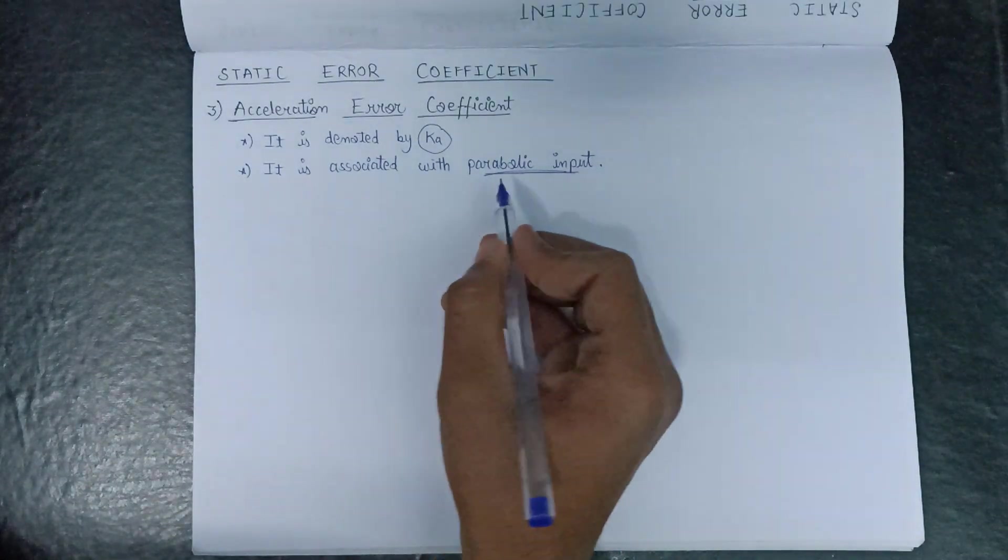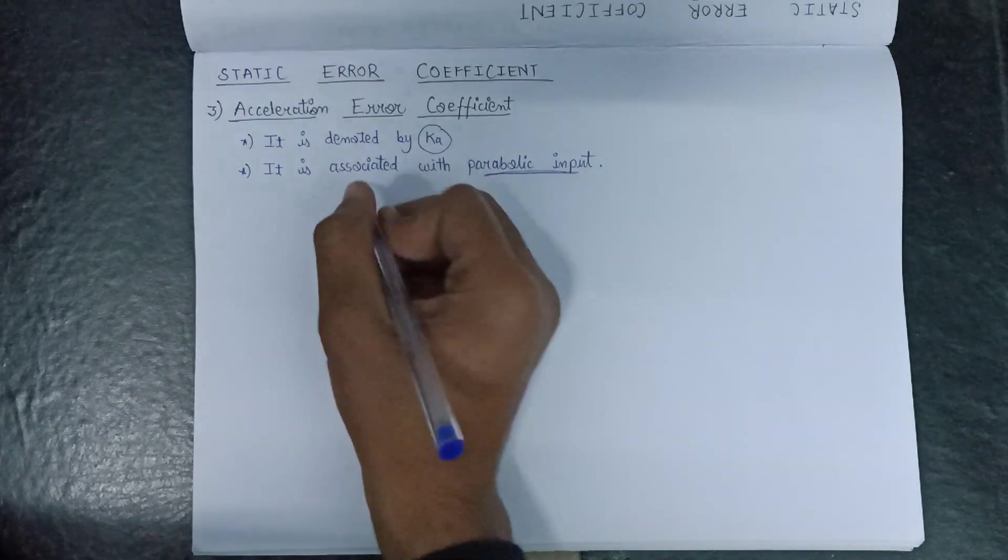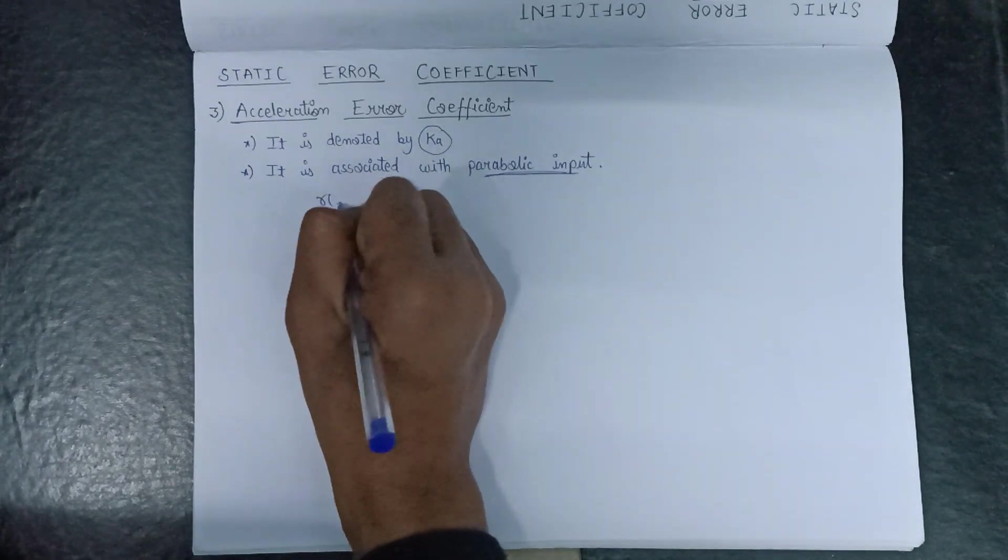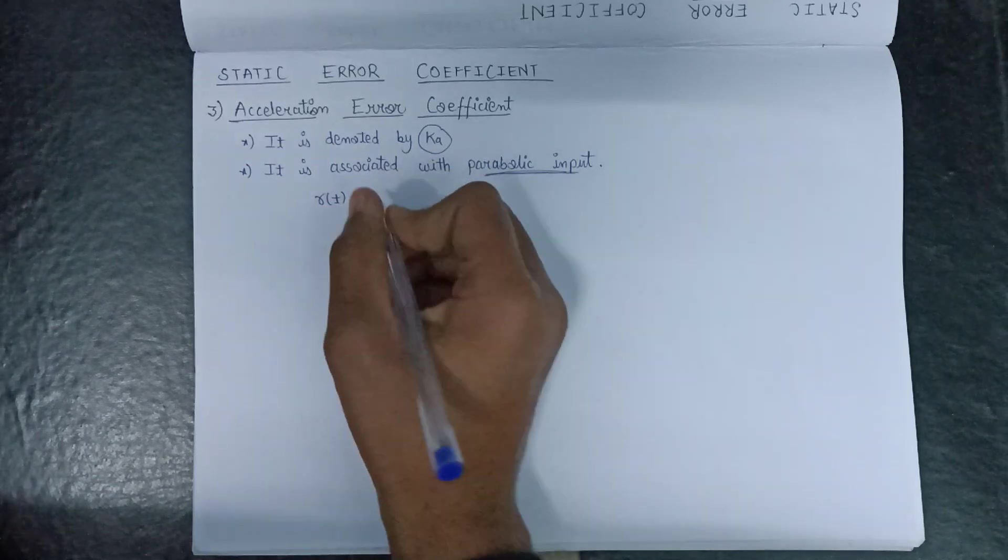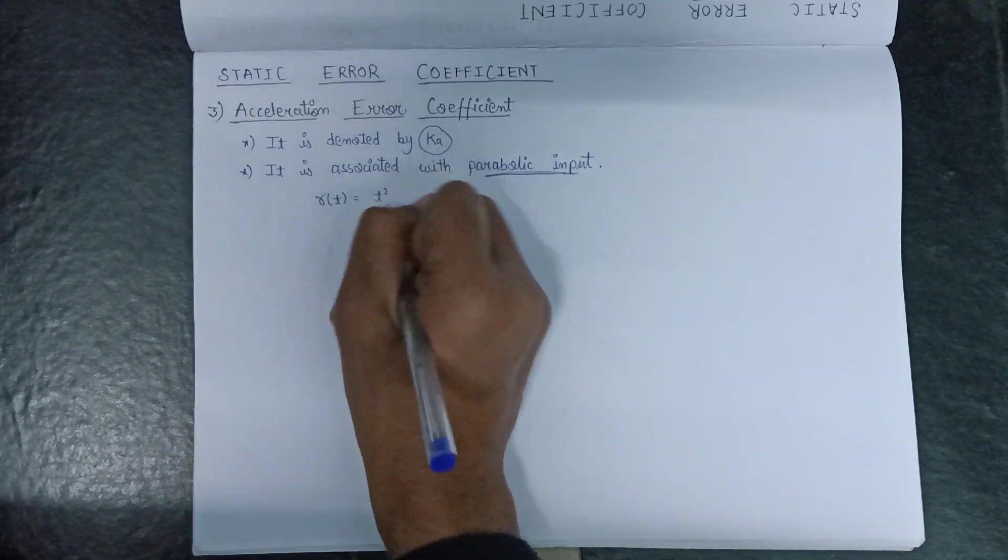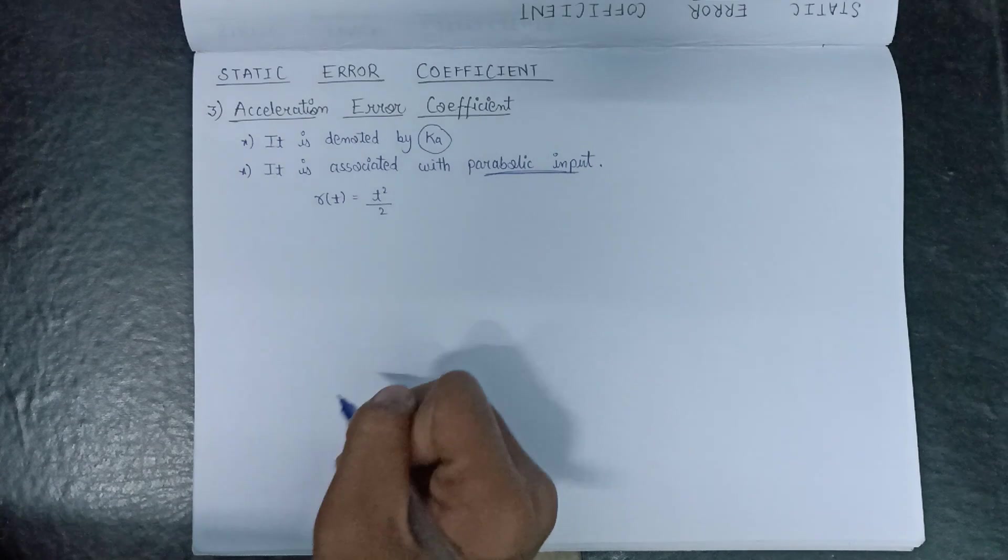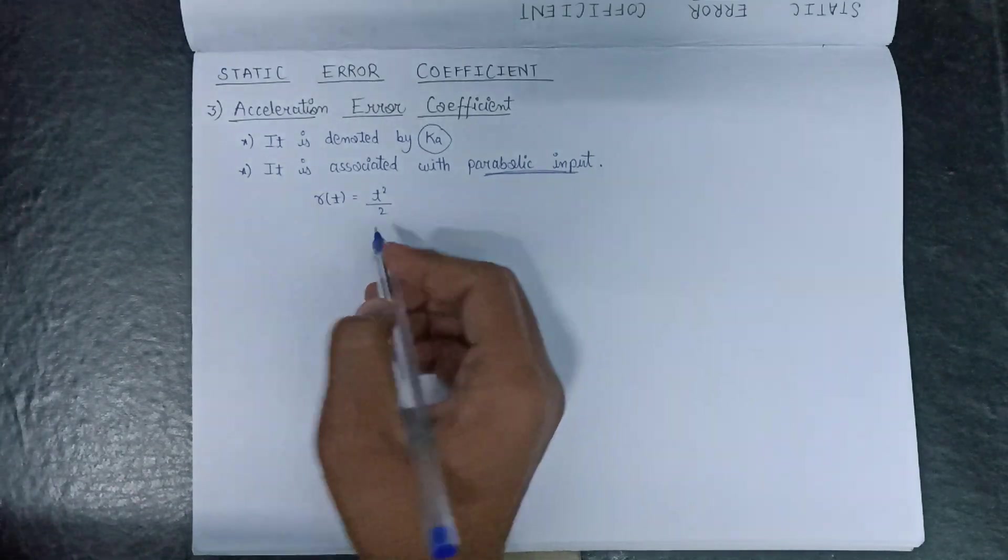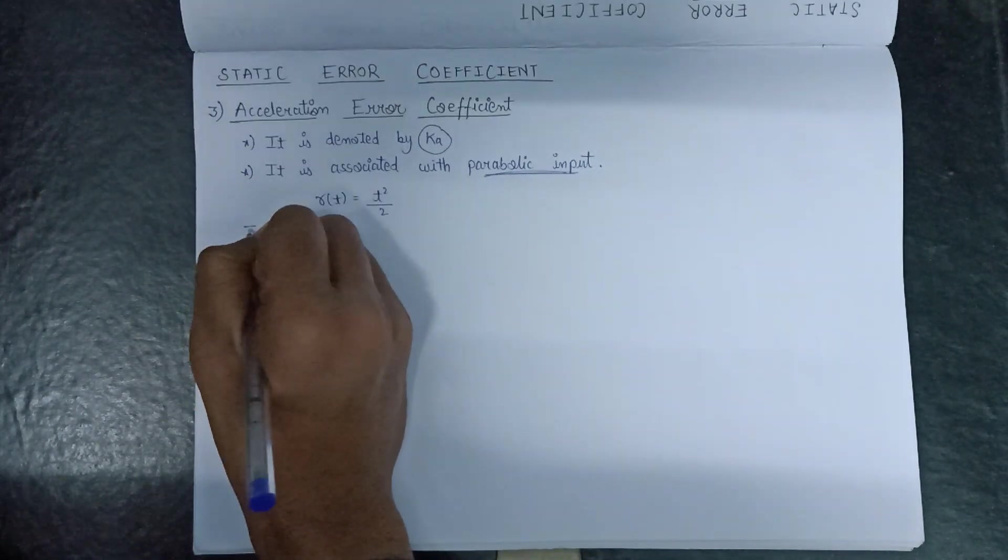Since the parabolic input is given as an input, that's why R(t) will be equals to t²/2, since it is a parabolic input. On taking the Laplace transform,